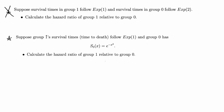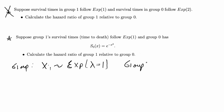For the second problem, we do something similar. For group 1, the survival times follow an exponential distribution with lambda equal to 1. For group 0, we're not given an exponential distribution or the actual probability distribution — we're given the survival function directly. The survival function for group 0 is equal to e to the negative x squared.